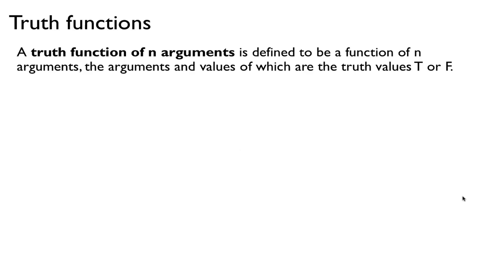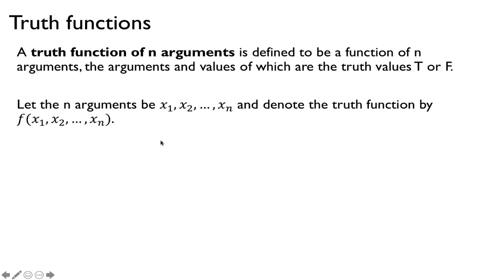Let's talk about the truth function. A truth function of n arguments is defined to be a function that takes n inputs, or n arguments, and the arguments and values can only be true or false. So for example, say you have a function with inputs x1 to xn — these are Boolean variables that take on either true or false, or these are propositional symbols. This function is denoted by f of x1 to xn, so it's a function of n variables.